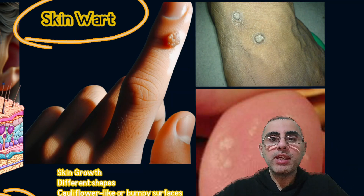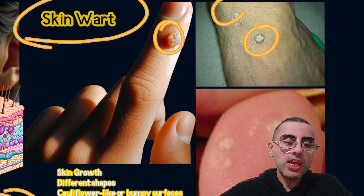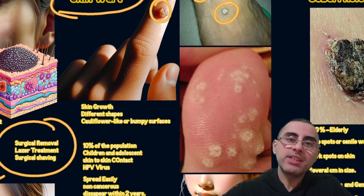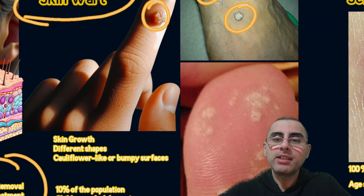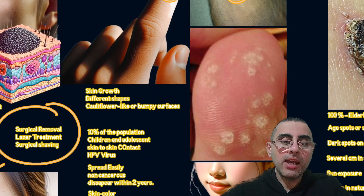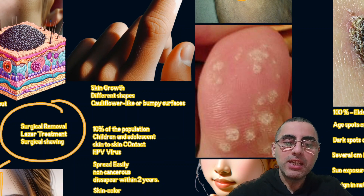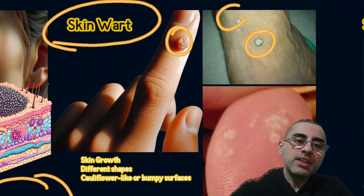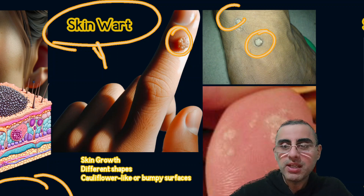The second most common skin growth is skin warts. Skin warts are an infection caused by the human papillomavirus. You can see them with a bumpy or smooth surface; most commonly they are described as flower-shaped and are usually less than one centimeter in diameter. They can develop almost everywhere but are usually found on hands and feet, and most commonly affect children and adolescents, although they can occur at any age, especially if a person's immune system is weakened.